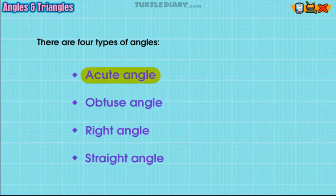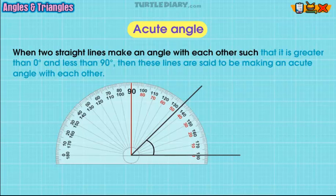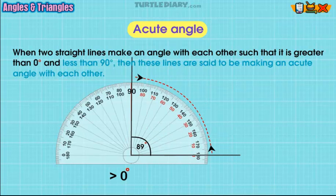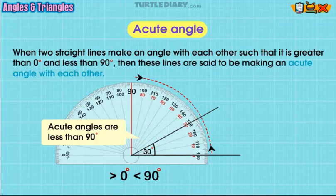Acute angle: when two straight lines make an angle with each other such that it is greater than zero degrees and less than 90 degrees, then these lines are said to be making an acute angle with each other.